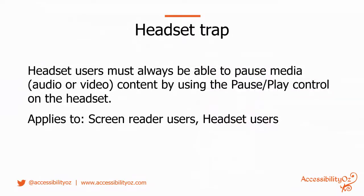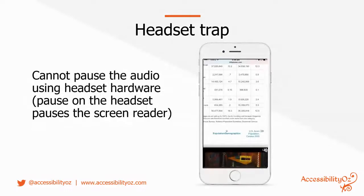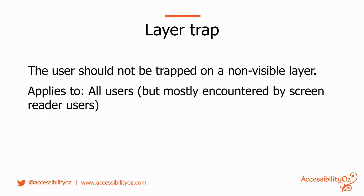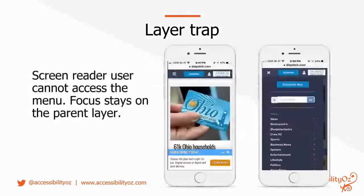The headset trap: headset users must always be able to pause media audio or video content by using the pause/play control on the headset — this applies to both screen reader users and headset users. Here's an example where a video pops up at the bottom of a website; as a touch user you can activate the mute icon, but as a headset or screen reader user, activating the pause button just pauses the screen reader, not the video content — so they can't hear their screen reader and can't use the rest of the page. The layer trap: the user should not be trapped on a non-visible layer — this applies to all users but is mostly encountered by screen reader users. For example, when you open the hamburger menu, the screen reader or keyboard focus stays on the page underneath so they can't access the menu or close it.